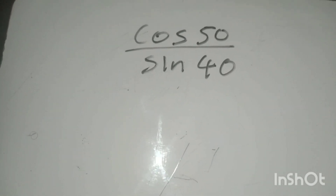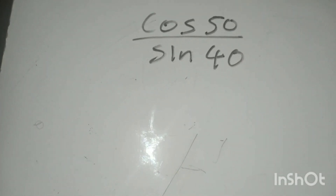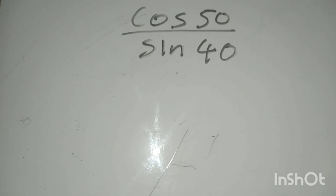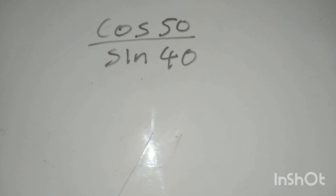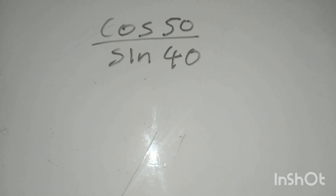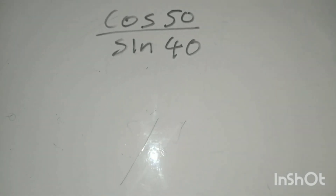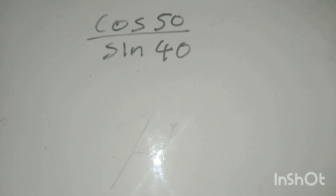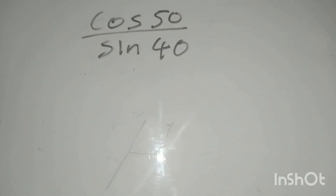Today I'm going to show you how to use co-ratios without a calculator. Sometimes you might be solving a trig equation and they say solve without a calculator, then you realize they gave you angles that are not special angles. So how do you solve angles that are not special angles without a calculator? It's by the use of co-ratios. Whenever you have two angles that are not special angles and those two angles add up to 90, then you should use co-ratios.